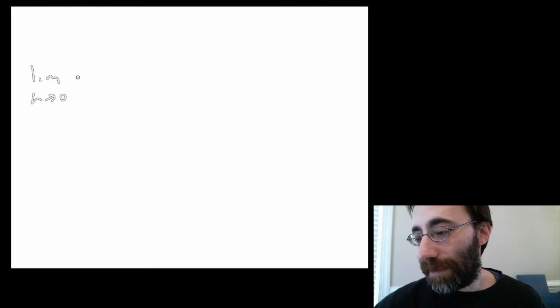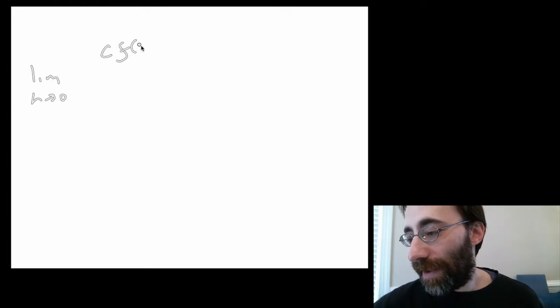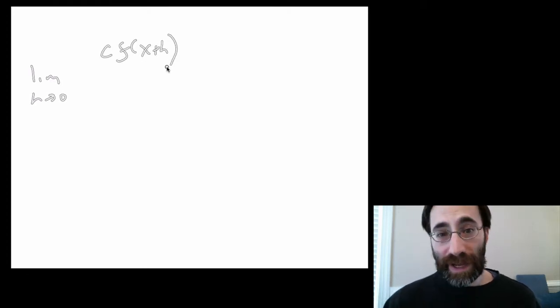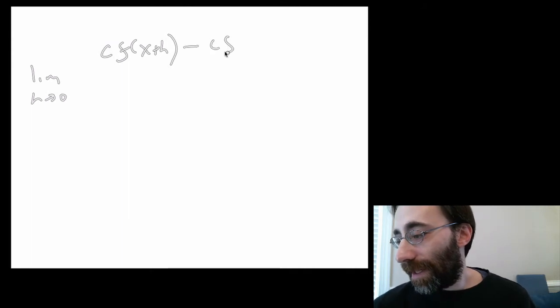Let's say we have a function that's a constant times the function itself. We're going to take that derivative. Well, again, it's the limit as h goes to zero of c times f evaluated at x plus h minus c times f of x divided by h.